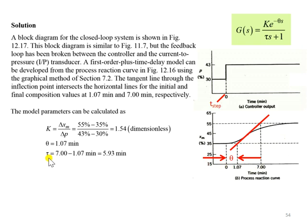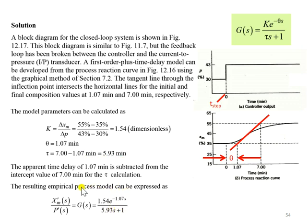Therefore, finally, we can write this estimated FOPDT where we have 1.54 as the process gain, theta as the time delay, and 5.93 as the tau or time constant.